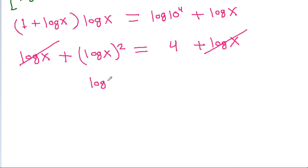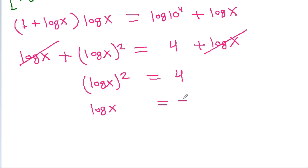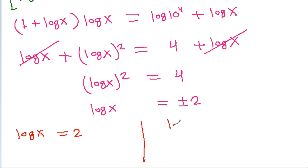So log x squared equals 4, which gives log x equal to plus or minus 2. We get log x equals 2 and log x equals minus 2.